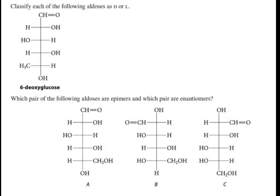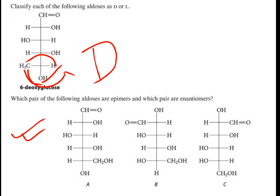Here is an exercise: classify each of the following aldoses as D or L. A hint — first make a cyclic permutation so that the CH2OH comes into the vertical position, OH goes to horizontal, and H moves accordingly. You will find that one is D. Check the next one yourself.